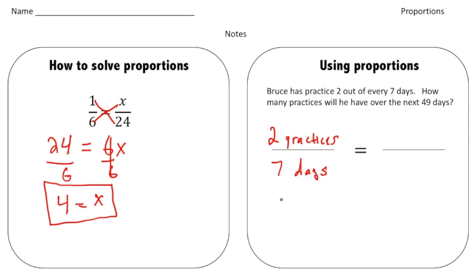Now here's the part you really got to pay attention to. To write this ratio over here, you always want to have the same labels. So if practices is on the top of this fraction, practices needs to be over here. And then if days is on the bottom, well days needs to be on the bottom of this ratio.